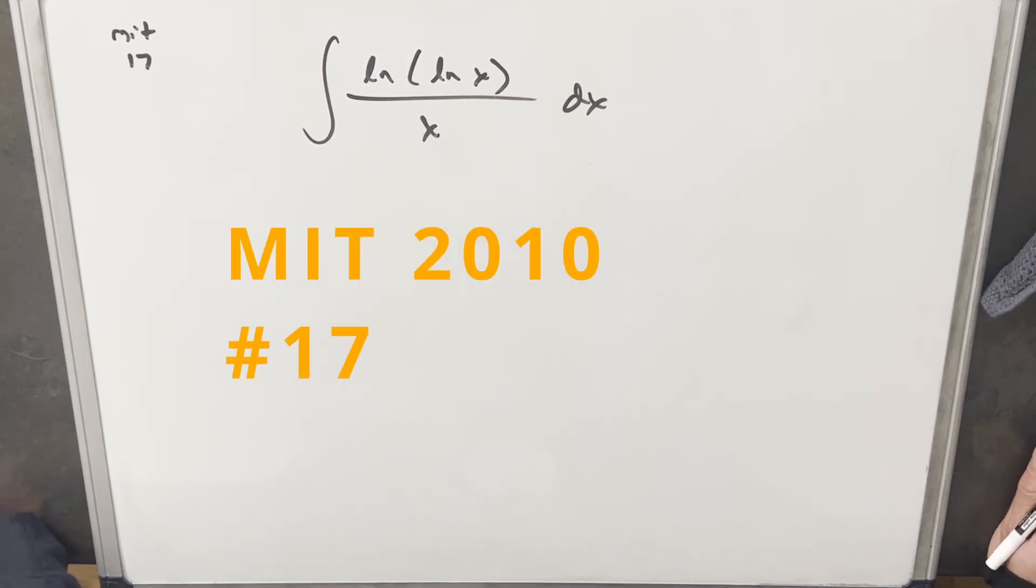Hey, we have another integral here from MIT Integration B 2010. This was problem 17. We have the integral of natural log of natural log x over x dx.